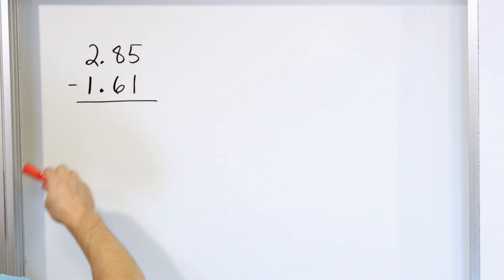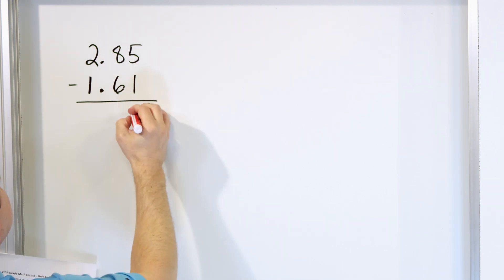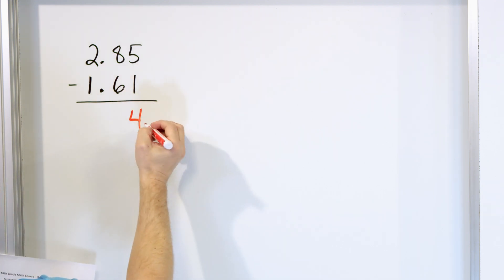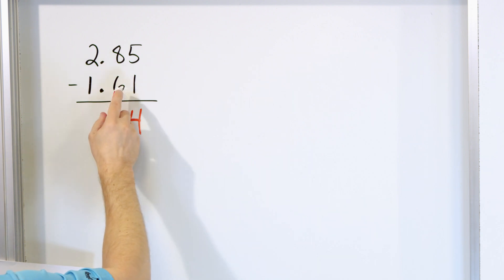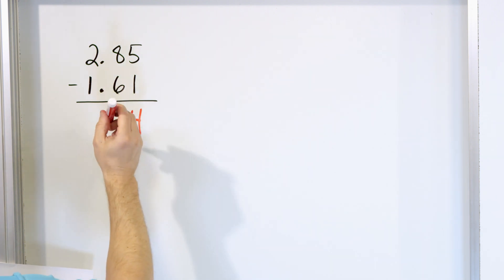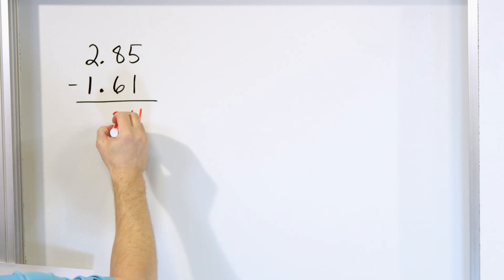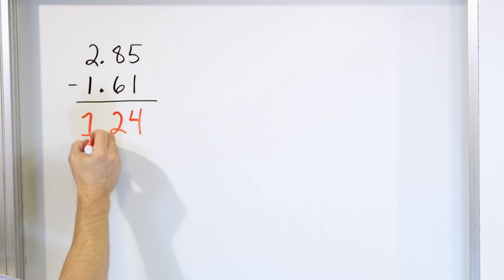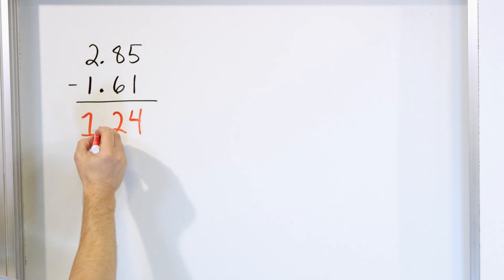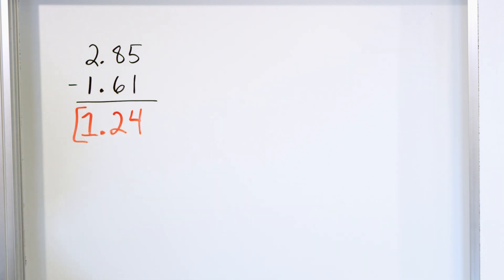What is 5 minus 1? 5 minus 1 is, of course, 4. What is 8 minus 6? You can count down: 7, 6, 5, 4, 3, 2. 8 minus 6 is 2. 2 minus 1 is 1, and the decimal just goes straight down in alignment with what's above, and the answer is 1.24.